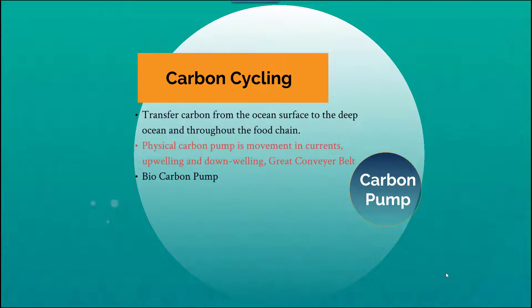Carbon cycling is essentially the transfer of carbon from the ocean's surface to the deep ocean through the food chain. For instance, a whale eats plankton at the surface, the whale's waste goes down to the bottom of the ocean, creating a movement of carbon. The physical carbon pump involves movement in currents, upwelling, and downwelling, which constitutes the great conveyor belt.